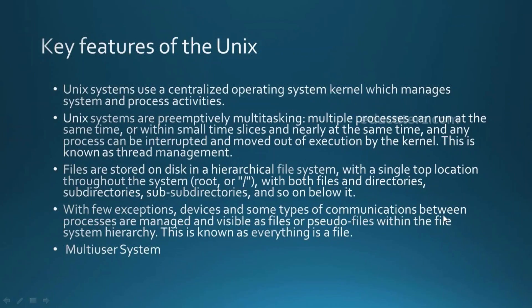UNIX is said to be the most robust operating system. You can run a UNIX system with high performance for years together without rebooting — it has higher memory management capacity and is a very high-performance operating system known for its reliability, security, and robustness. It is mostly used in server-side operating systems, workstations, and powerful supercomputers. UNIX systems are said to be the most secure — unlike Windows, there is no concept of antivirus in UNIX. The systems are built with more security layers and continuous updates make UNIX more and more secure.